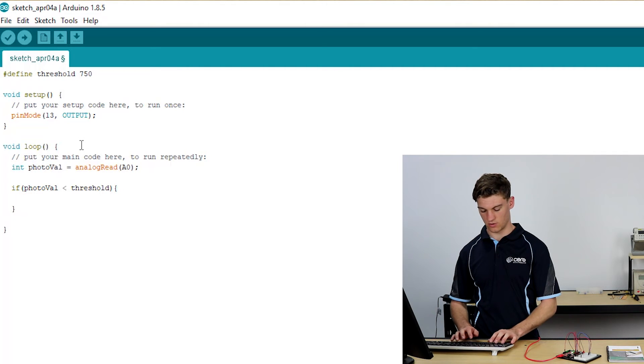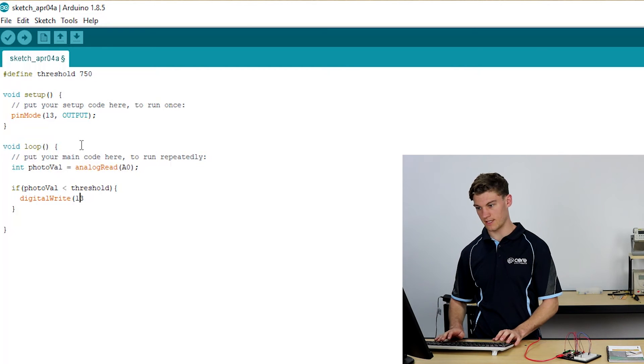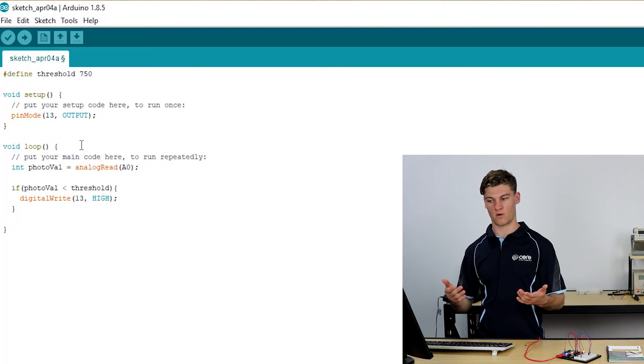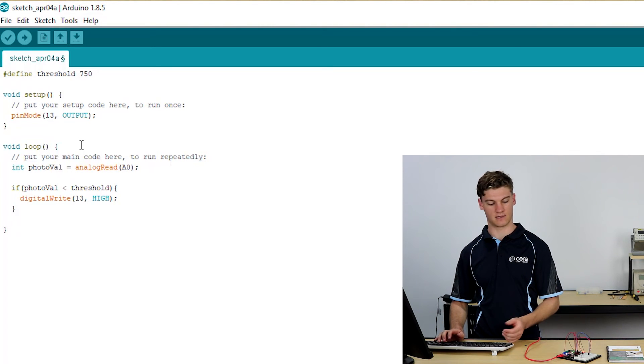Then we want to digital write pin 13. Digital write pin 13 and we want to write it high. So we're saying that if it's dark we want it to be on, and if it's light we want it to be off. So that's if it's dark we want it to be on.